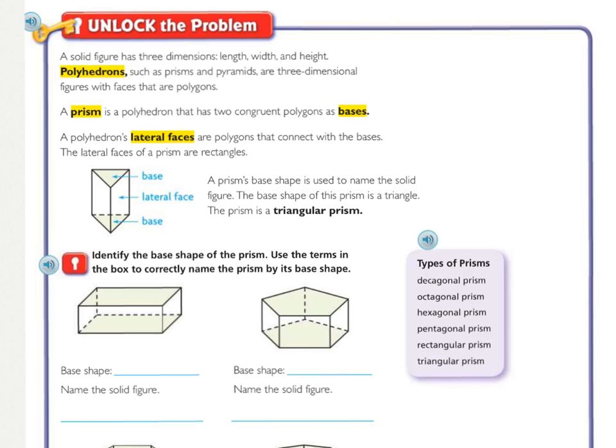A prism is a polyhedron that has two congruent polygons as bases. Congruent means same size and shape. And the bases are going to be like right here, the top and bottom. A polyhedron's lateral faces are polygons that connect with the bases. So the lateral faces of a prism are rectangles, no matter what the base is.